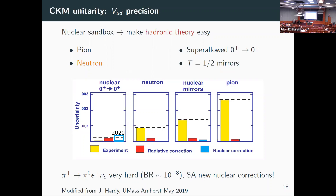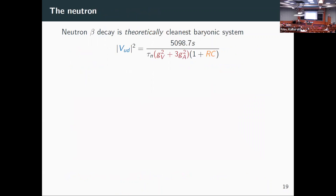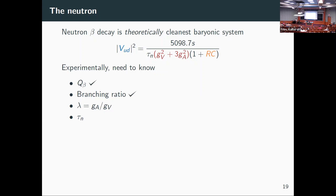That makes the neutron look pretty good — no nuclear corrections, and experimentally we can push down. Neutron beta decay is theoretically the cleanest baryonic system. Writing the full equation, Vud is the number I'm interested in, and experimentally I need to know: the Q-value (simple enough — mass difference between proton and neutron, known well enough), the branching ratio (trivially 100%), the neutron lifetime, and the ratio of coupling constants ga/gv.